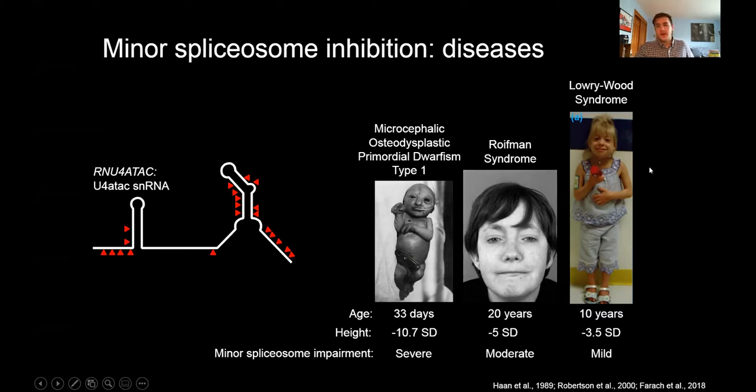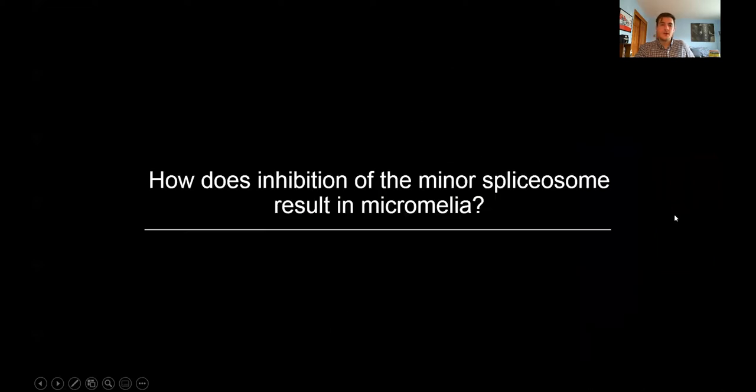What I looked at in these disorders was that although the limb size is severely reduced in these patients, especially in this Lowry-Wood syndrome individual, the general limb pattern is maintained and the structural organization is intact. This led to my thesis and general question for this manuscript, which is: how does inhibition of the minor spliceosome result in micromelia?